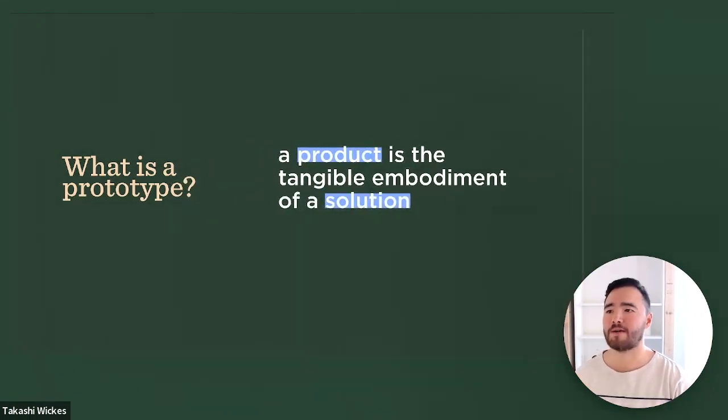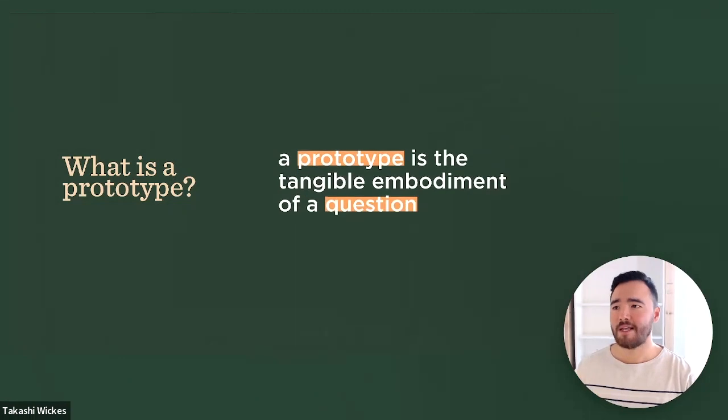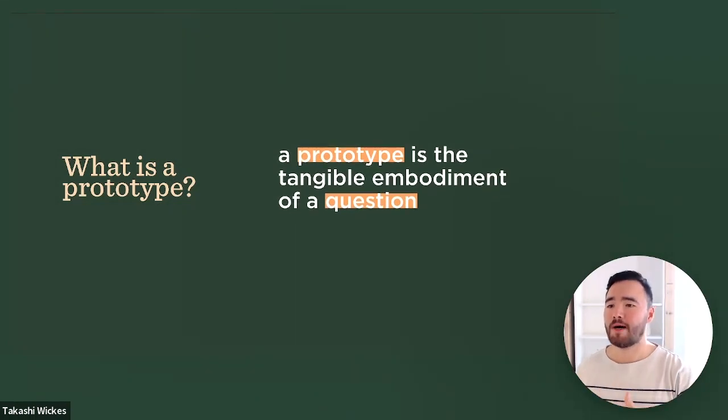And the difference between a prototype and a product really comes down to this statement here. So a product is the tangible embodiment of a solution, right? It's something that we put out into the world, we see how customers are interacting with it. And then that's our end game, that's our product that we're trying to create. But the shift in mindset here is that a prototype is a tangible embodiment of a question. Rather than being a tangible embodiment of a solution, a prototype is always focused on asking a question. It's all about putting something out into the world, getting feedback on it, and then iterating.